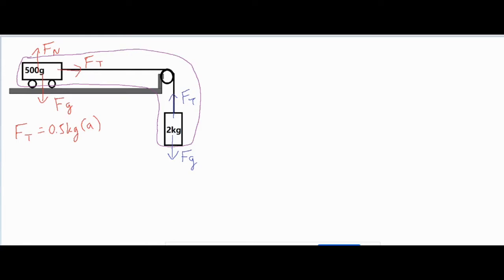And then for my hanging mass, it has an FG and then it has an FT. Now, before we get going with that, one thing we have to keep in mind is when we have pulleys, it can kind of affect the positive and negative values.